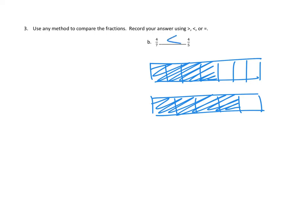I want to think about it one other way. In each case we have four of the units — four sevenths here, four fifths here. If you have four of one thing and I have four of one thing and we're comparing size, the question is: how big are the pieces? When the whole is divided into fewer pieces — fifths in this case — the pieces are bigger. Each fifth is bigger than each seventh. So if we have the same number of units and these are the bigger units, then 4 fifths is the bigger number.